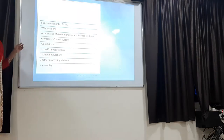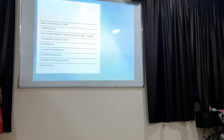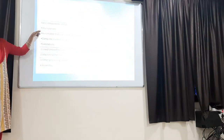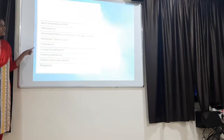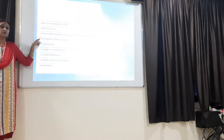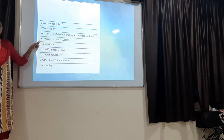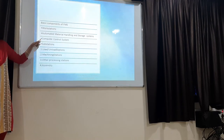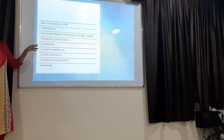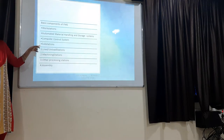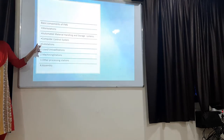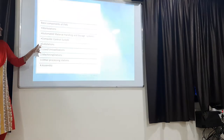The basic components of FMS are: workstations where machines are placed; an automated material handling and storage system which moves goods from one workstation to another; a computer control system which is the main element controlling all necessary functions; and substations — machines within workstations that also perform machining operations.